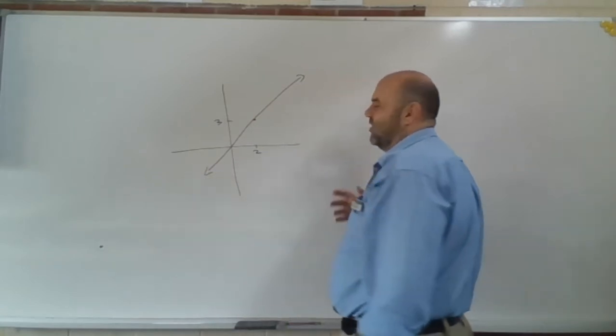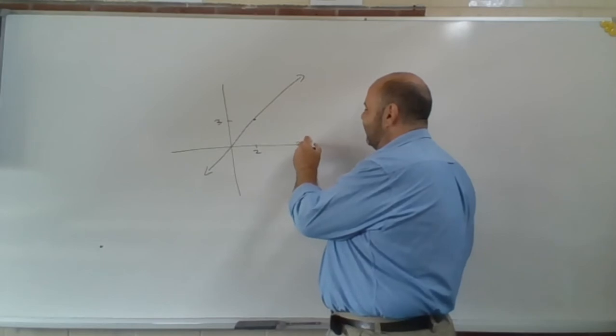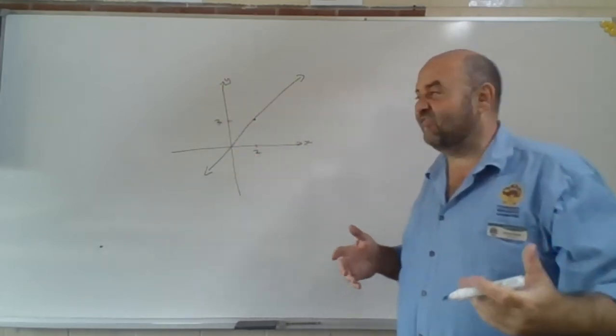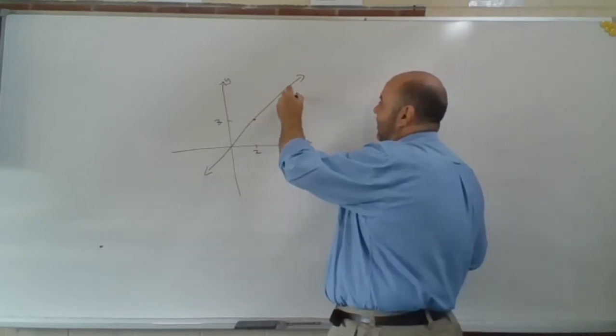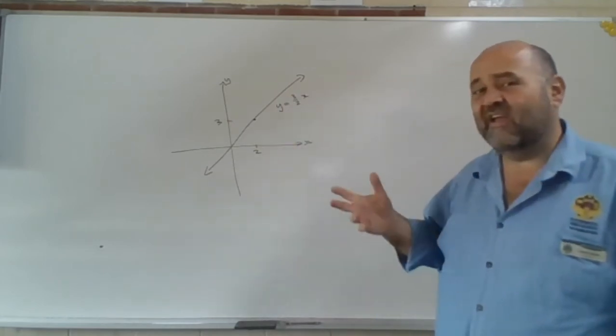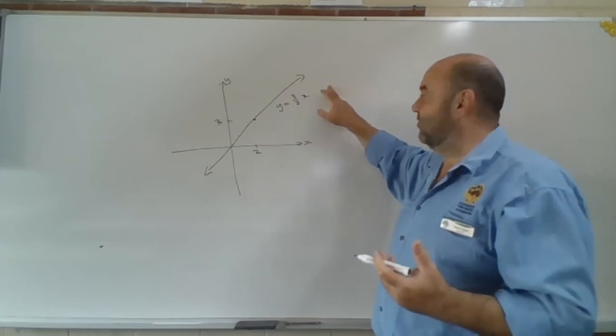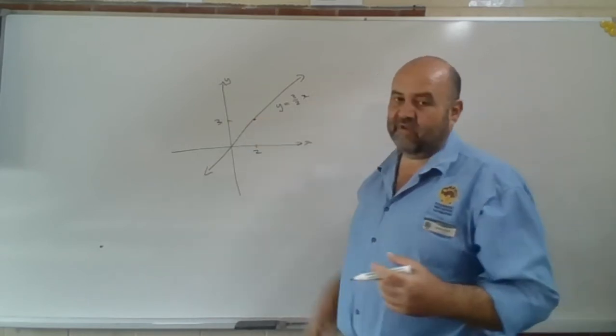I've drawn the line. That's going to be all of the points, all of the points that satisfy the equation y equals 3 over 2x. It goes through the origin so there's no constant to be added or subtracted. There's no plus b. And the gradient is simply the rise divided by the run.